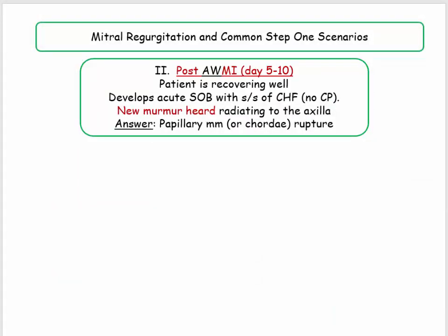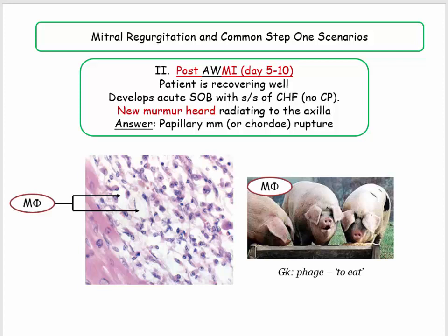The next scenario is in the setting of an anterior wall MI. The patient has acute shortness of breath and signs and symptoms of heart failure on days 5 through 10. No chest pain will be offered, underscoring that we aren't dealing with ischemia. They will report the new onset of a heart murmur radiating to the axilla — new onset MR. The cause is rupture of the papillary muscle or chordae tendineae.